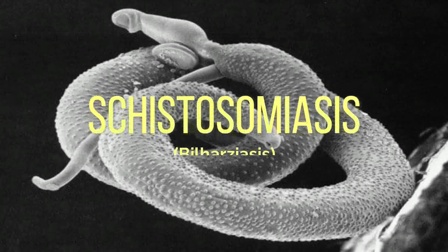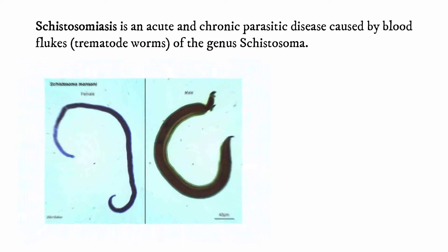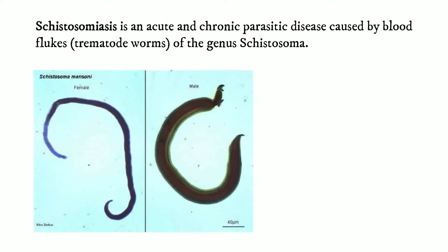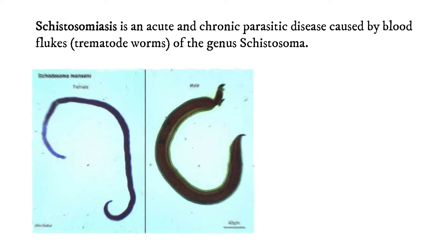Today, we will be talking about schistosomiasis, otherwise known as bilharziasis. Schistosomiasis is an acute and chronic parasitic disease caused by blood flukes, otherwise known as trematode worms, of the genus Schistosoma.